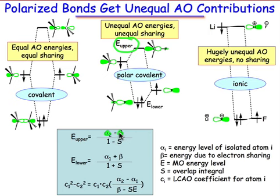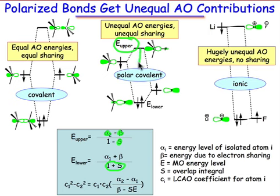β describes how strongly the carbon and the fluorine interact with one another. β is the energy due to sharing, and it's called the resonance energy. s describes the extent to which those orbitals overlap. Notice that in the denominator of the upper energy we have 1 minus s, making that number smaller than the denominator in e-lower, which is 1 plus s. That's why the destabilizing energy is larger than the stabilizing energy.